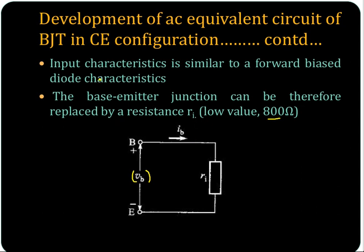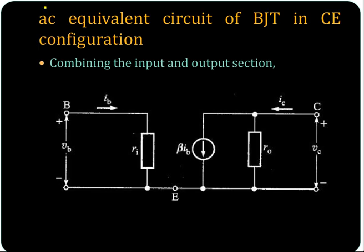So finally the transistor AC equivalent circuit can be formed by combining the input and output sections. The input section has VB, IB, and RI. The output section has a current source and a high dynamic output resistance.